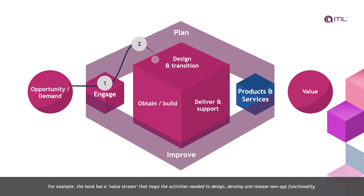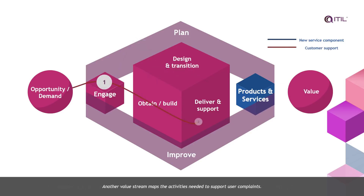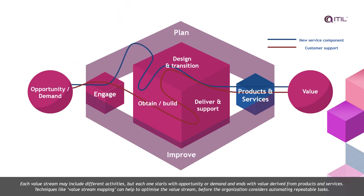For example, the bank has a value stream that maps the activities needed to design, develop and release new app functionality. Another value stream maps the activities needed to support user complaints. Each value stream may include different activities, but each one starts with opportunity or demand and ends with value derived from products and services. Techniques like value stream mapping can help to optimise the value stream before the organisation considers automating repeatable tasks.